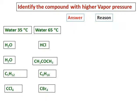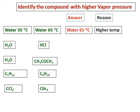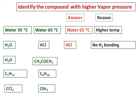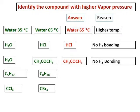Now, let's do the same thing for vapor pressure. Identify the compound with higher vapor pressure. Water at 35 degrees Celsius and water at 65 degrees Celsius. Water at 65 degrees Celsius will have a higher vapor pressure because of higher temperature. In the next group, HCl will have a higher vapor pressure because it cannot form hydrogen bonding. Water and acetone. Acetone cannot form hydrogen bonding and hence it will evaporate easily and will have a higher vapor pressure.